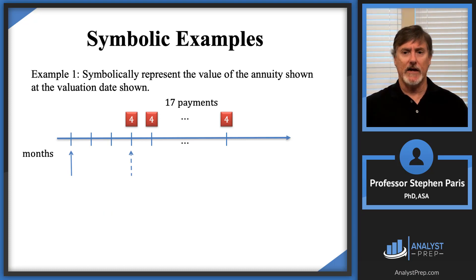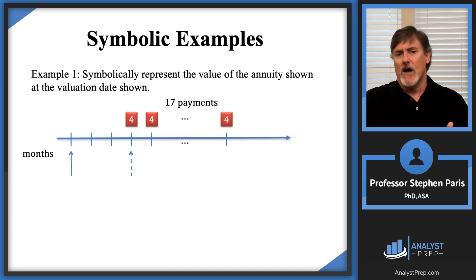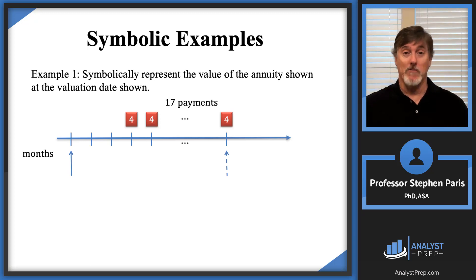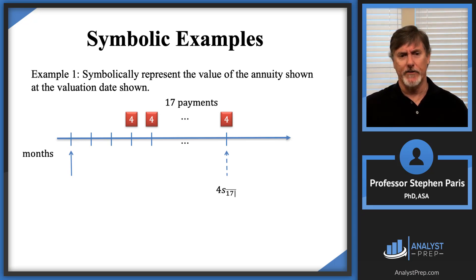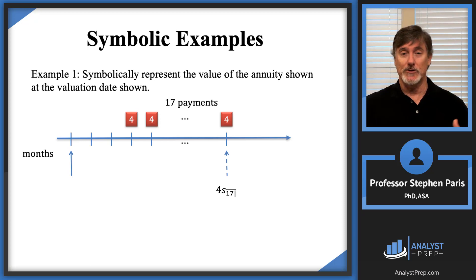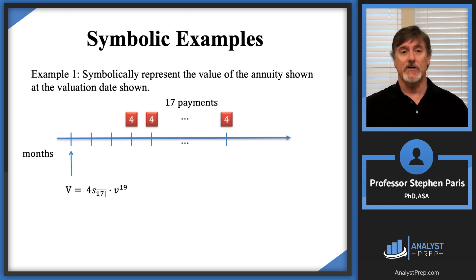Those were two perfectly acceptable expressions. You could also use an odd choice: a valuation date at the time of the last payment. The value of the annuity at that time is four times S-angle-17. You just need to figure out how many periods to discount back to the original valuation date. If you count, there are 19 periods, so the value of the annuity would be four times S-angle-17 times V-to-the-19th.